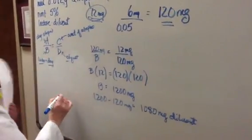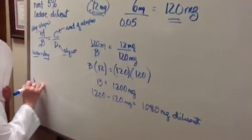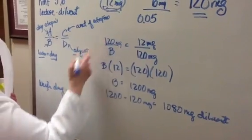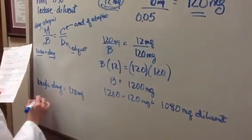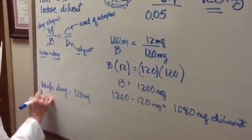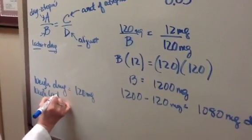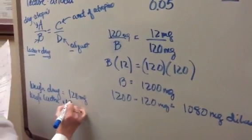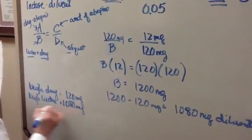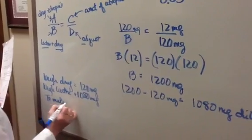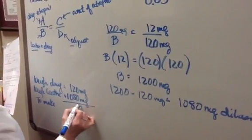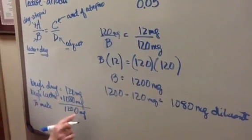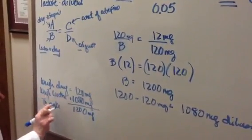So now, to explain how I would do this, I would weigh my drug, which is 120 milligrams, and I mix it with my lactose that I've weighed, 1,080 milligrams. And I have made a total of 1200 milligrams of mixture, which contains drug and lactose.